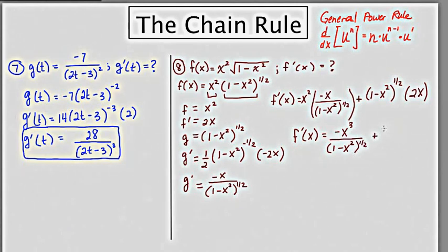plus 2x times 1 minus x squared to the 1 half, and I'm going to put this over 1, because what I'm going to do now is find a common denominator, and then I'm going to be done.